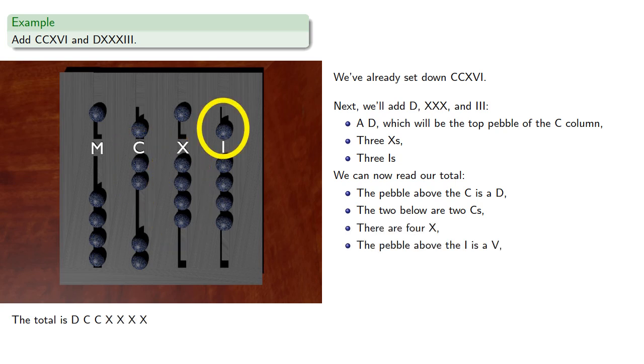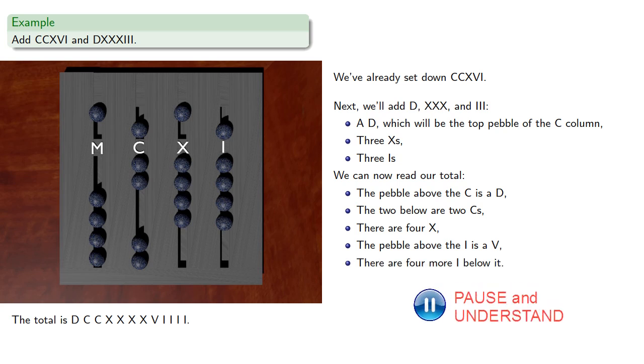The pebble above the I is a V, and there are four more I below it. And so that gives us our total.